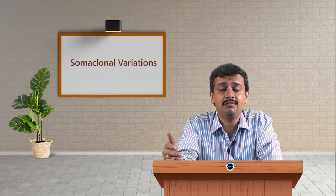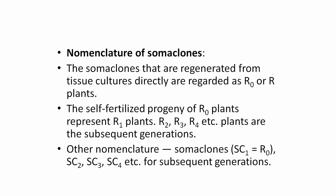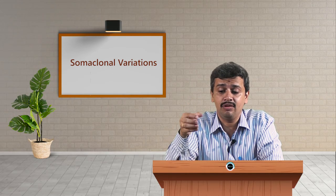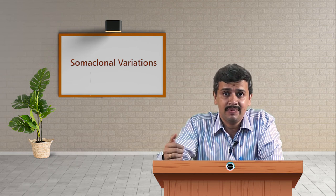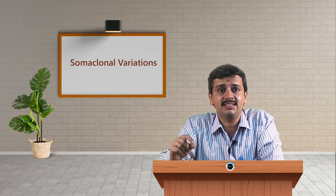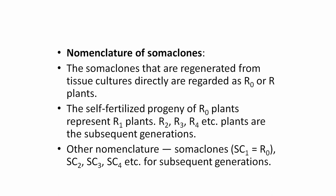You may have generated different somaclones — this actually cuts short the breeding cycle. As stated with the Alphonso example, conventional breeding requires at least a decade to bring in desired variations. Whatever variations you have produced become a new variety, and you need to name them as a true breeder. In the case of somaclonal variations, a new variety can be named as R0, R1, R2, R3 in subsequent generations.